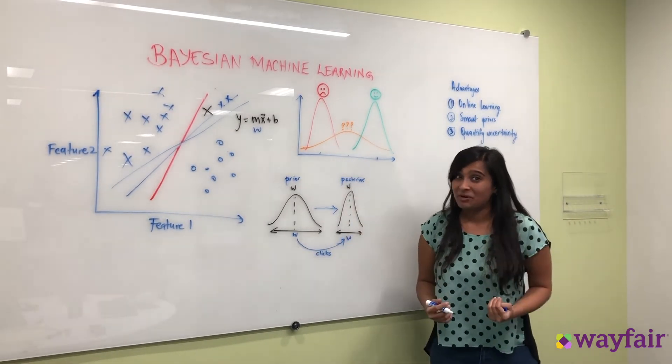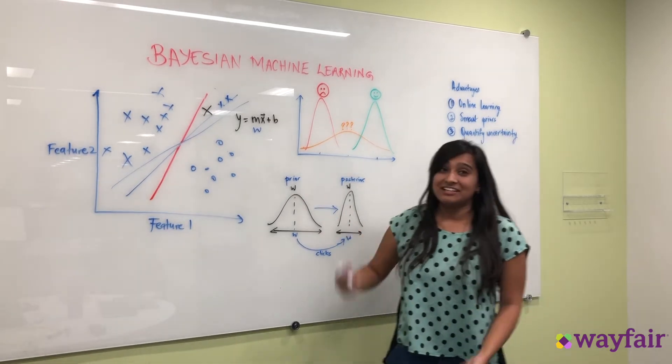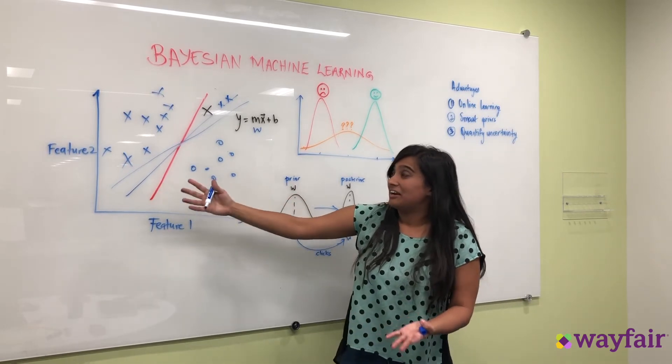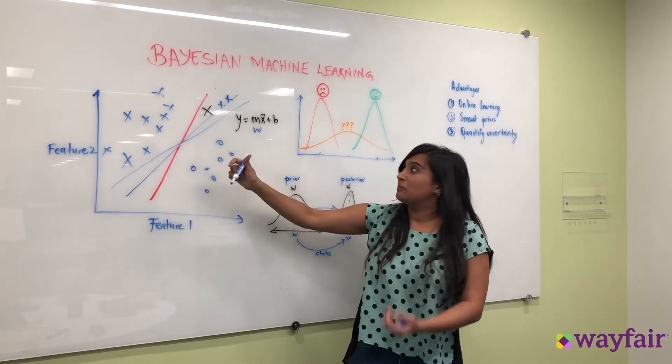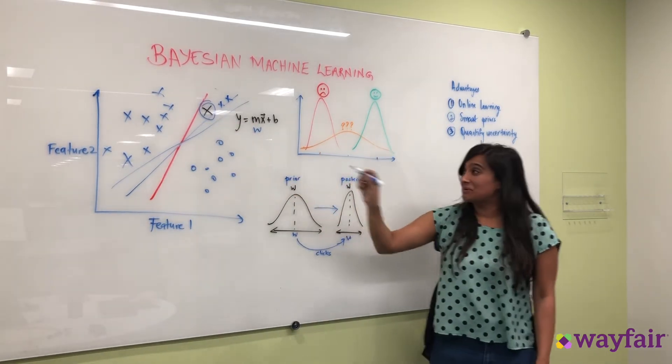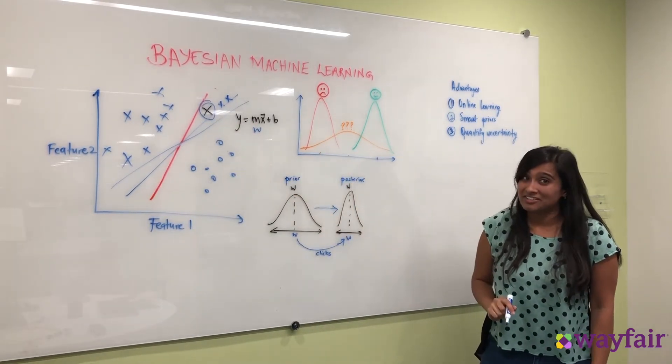And this can be really important because say you're designing a self-driving car and all the data you've seen you're trying to identify person not person, well this can cost you someone's life. So we do not want to mess around with machine learning models that don't quantify uncertainty.